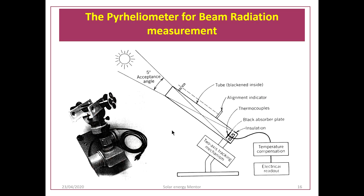For measurement of the direct or beam component, the instrument used is the pyrheliometer. It is essentially a pyranometer mounted on a two-axis tracking mechanism that follows the sun's path, ensuring sunlight always falls on the sensing element. The direct radiation falls on the sensing element and is read out in millivolts.